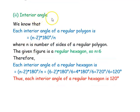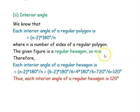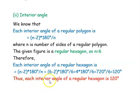Next, we find each interior angle of the given regular hexagon. The formula for each interior angle of a regular polygon is (n − 2) × 180° ÷ n, where n is the number of sides. Our figure is a regular hexagon, so n = 6. Substituting: (6 − 2) × 180° ÷ 6 = 4 × 180° ÷ 6 = 720° ÷ 6 = 120 degrees. Thus each interior angle of a regular hexagon is 120 degrees.